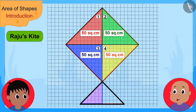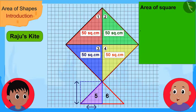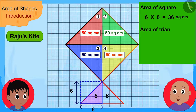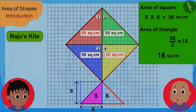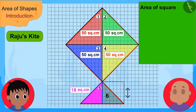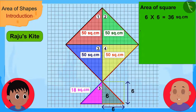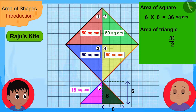"Now, this lower small triangle is half of this square. The area of this square is 6 times 6, or 36 square centimetres. So the area of this small triangle will be 36 divided by 2, or 18 square centimetres. This second small triangle, just like the first small triangle, is half of this 36 square centimetres. This means the area of this second small triangle is also 18 square centimetres."